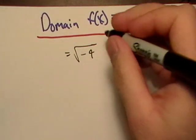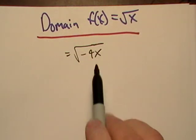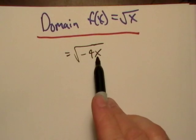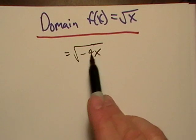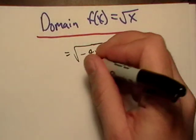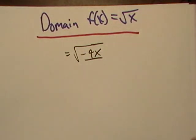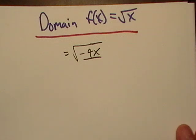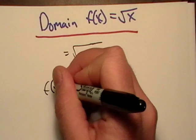If I have a variable plugged in here, that variable's job is basically going to be to ensure that this radicand, which is whatever's inside the radical, is greater than zero. So let's just start with a simple one.